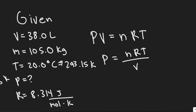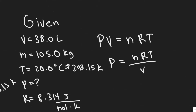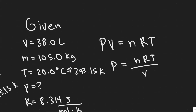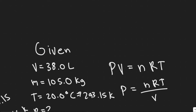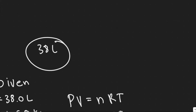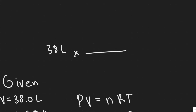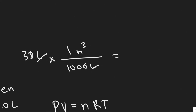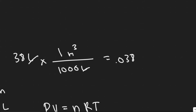So now we've got the temperature and R. We need the volume in the correct units — you want it to be in meters cubed, not liters. So for 38 liters, we know that there are 1,000 liters for every one cubic meter, so you just divide by 1,000. 38 divided by 1,000 gives you 0.038 meters cubed.